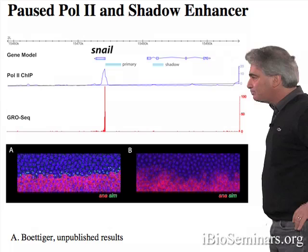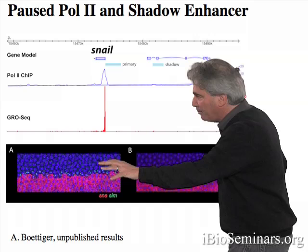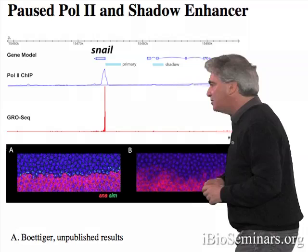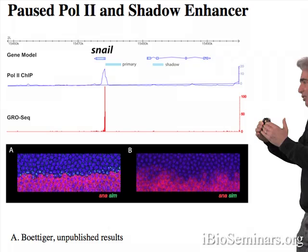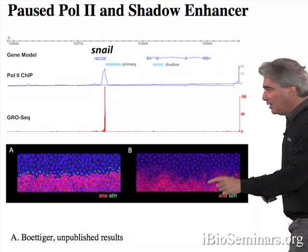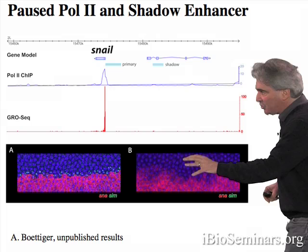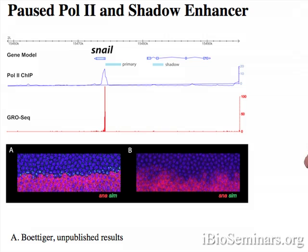The sharp border depends on mutual repression between neurogenic repressors present in lateral regions of the embryo and snail itself, which functions as a transcriptional repressor — repressors fighting each other to sharpen that border. On the right, you see the consequences of removing the snail repressor: in this mutant embryo that fails to make the snail repressor, the snail RNA is unevenly distributed, there is no longer a sharp border, and neurogenic repressors that are normally restricted to lateral regions are now de-repressed throughout the embryo, converting what should become the mesoderm into extra lateral neurogenic ectoderm.